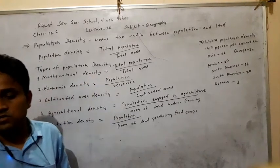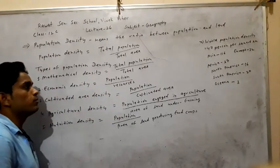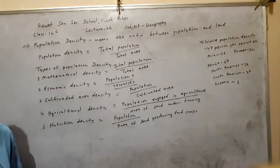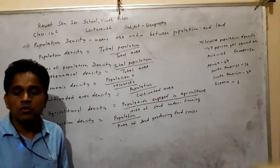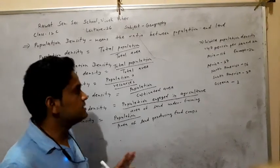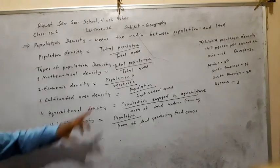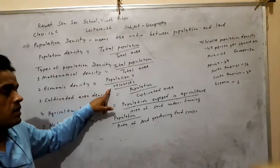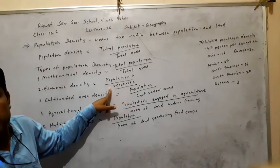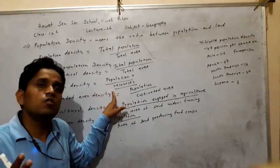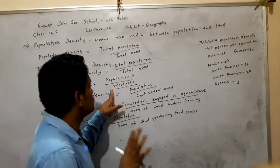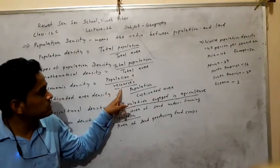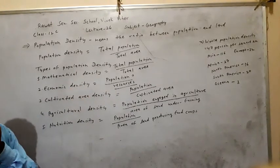In economic density, the productive capacity of total resources in a particular region is considered. We count the total population and the total resources of the region. Economic income also depends on resources. So the formula is: population divided by the productive capacity of resources in a particular region. That ratio is called economic density.